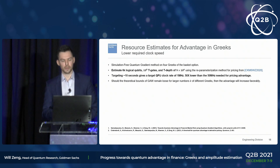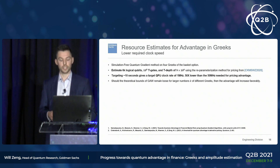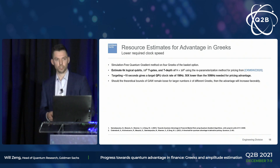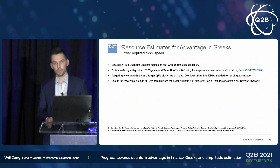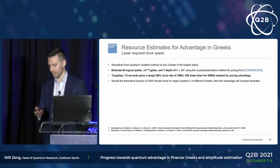Summarizing, the best-performing method is the simulation-free quantum gradient method on Greeks, requiring around 6,000 logical qubits, 10 to the 8 T gates, and a T-depth of about 9 times 10 to the 6. Targeting about 10 seconds of runtime, this gives a 1 megahertz T gate rate. There are also classical methods called automatic differentiation that scale well with dimension — we discuss a quantum version in the paper, though that comparison is not entirely settled.